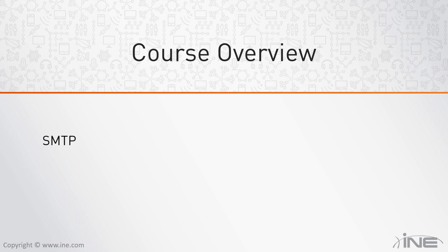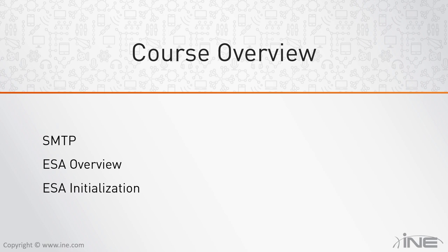Specifically, we're going to start our discussion with Simple Mail Transfer Protocol. This is going to be needed to understand the basic structure of an email message and its components, so you know what type of information you can potentially inspect with the ESA. I'm also going to show you the different types of ESA platforms, and we will then perform initialization of the ESA — showing you how to deploy ESA for the first time, how to configure the basic settings of the appliance, and I'm also going to discuss email processing and the order of features that will be applied on incoming and outgoing messages.